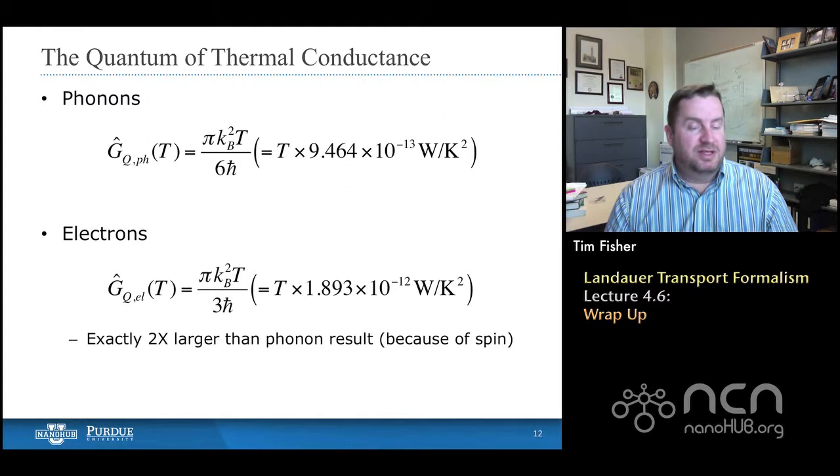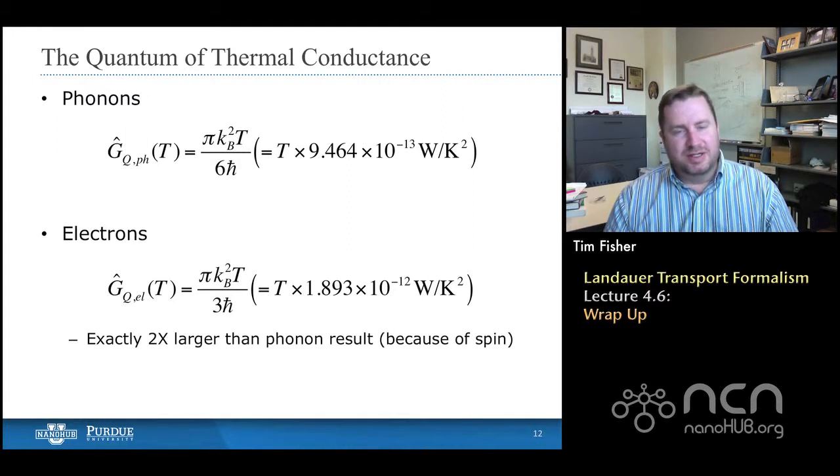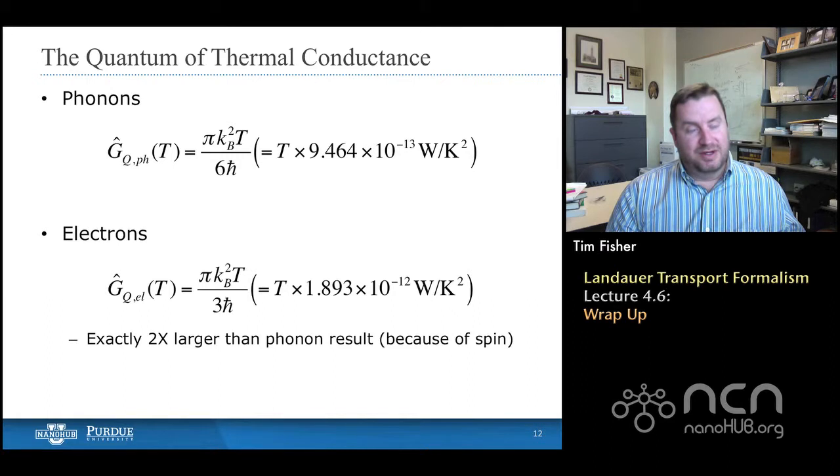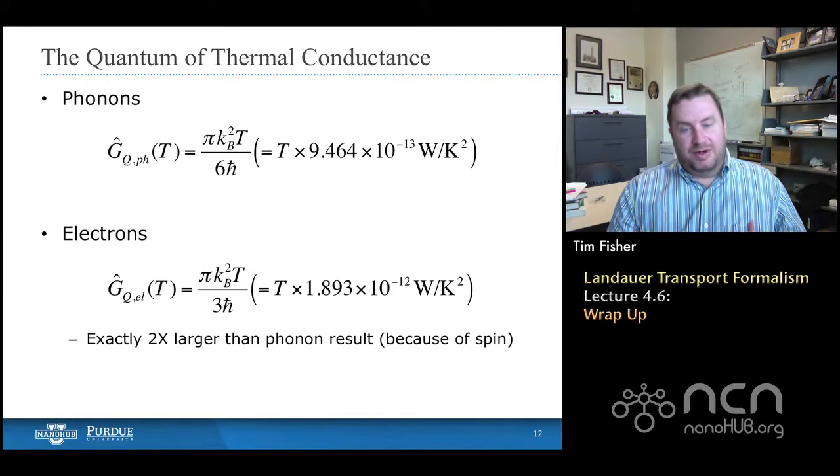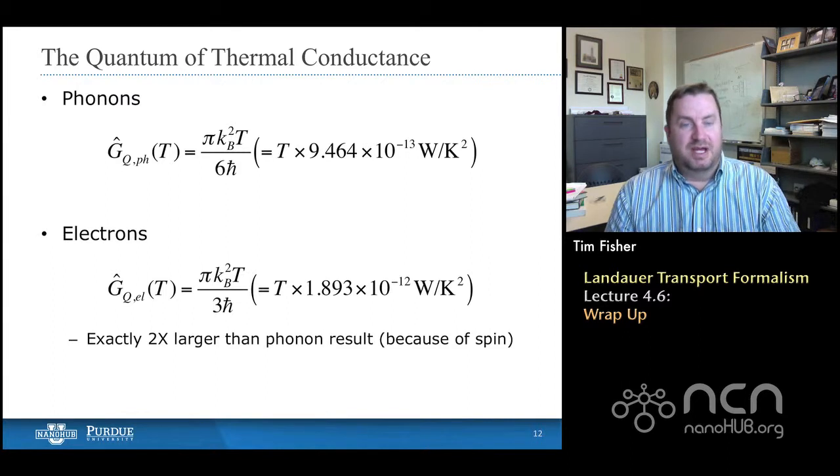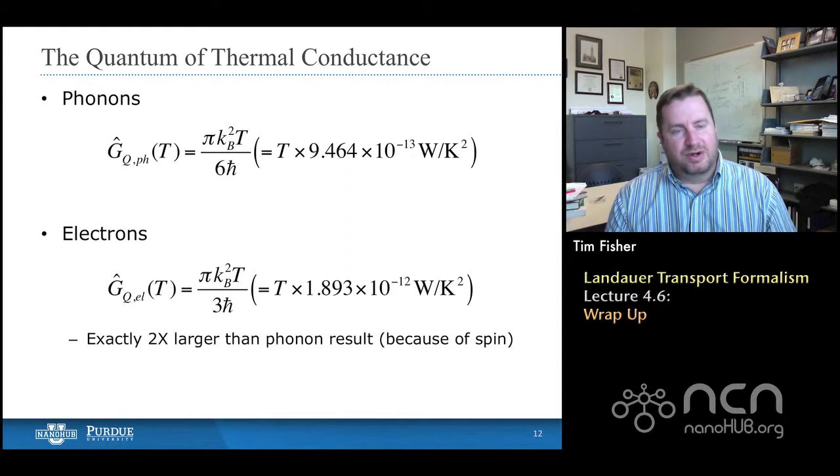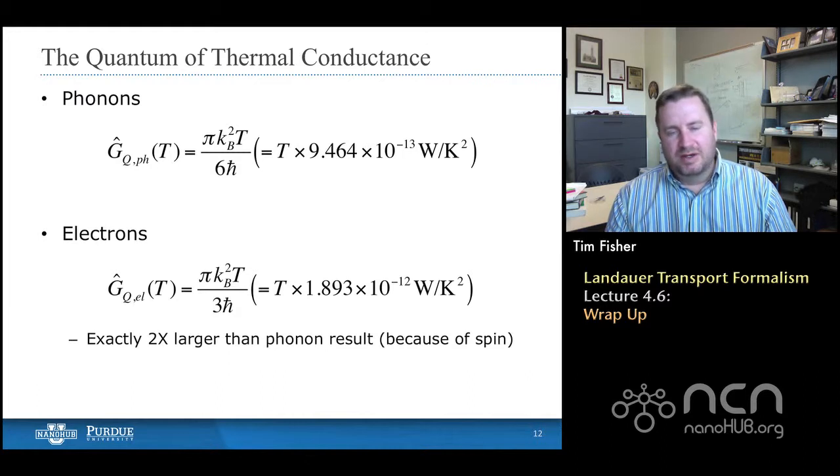So, for electrons, we actually find the same result within a factor of two. That's the spin degeneracy part. But the result, the numerical result is otherwise the same. And that's a little bit surprising too, perhaps. Because the statistics for phonons and electrons are different. And so people wonder what happened? We had substantially different occupation statistics. And yet we have the same result here. It's sort of a nuance of the mathematics that these functions, at least in some of the approximations that we have to make to evaluate the integrals, essentially look the same.